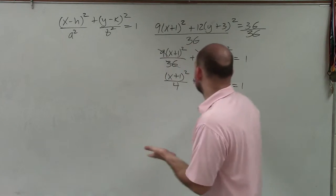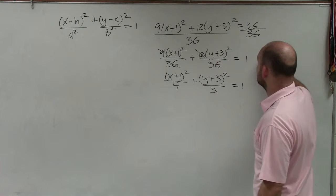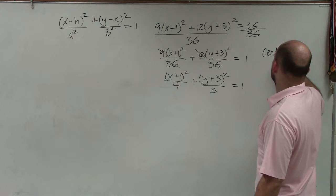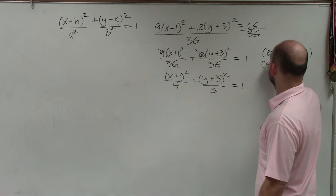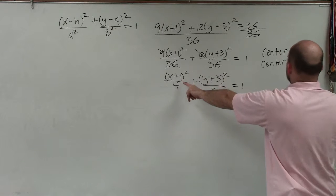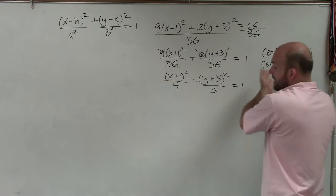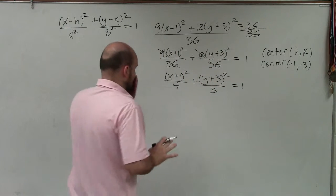So just by this information, I now can determine that the center is (h, k), which in this case, the center is the opposite of h, opposite of k. So opposite of 1 is -1. Opposite of positive 3 is -3. So now I know the center. Cool, right? And I'll graph that in just a second.